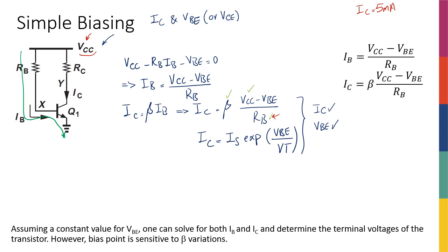And then looking at this, VBE is unknown. Beta is an intrinsic parameter of my transistor, so I cannot really change that unless I go back and rebuild my transistor. That's something I don't want to do as a circuit designer. And IC is given. So looking at VT is the thermal voltage. IS, again, is an intrinsic parameter of my transistor.